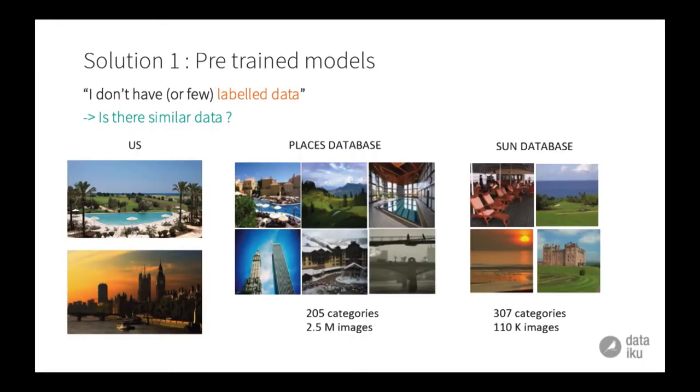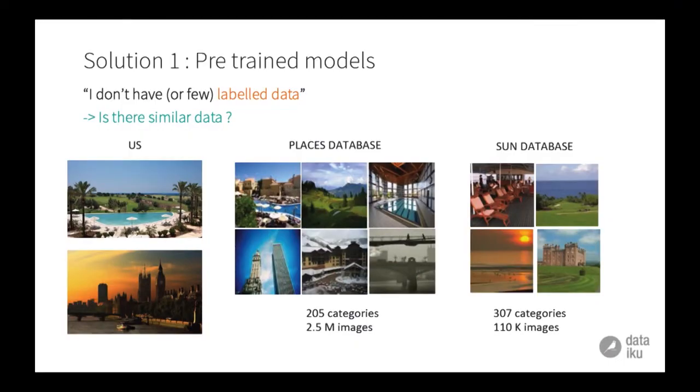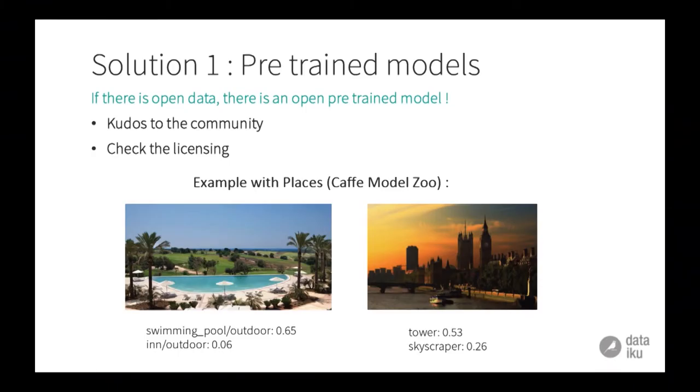So what can we do? The first thing: don't try to reinvent the wheel. Start by looking at the internet for what you can actually find. Can I find a database where I will have data that is similar to mine? Here you can see on the left the images we wanted to label. We found on the internet two databases: one called Places, where I have 2.5 million images, and one called Sun, where I have only 100,000 images. If I can label these Places and Sun databases, I will obviously be able to label my images. The good thing is, if the data is available and already labelled, there is probably someone who developed a machine learning model on top of that which you can reuse directly.